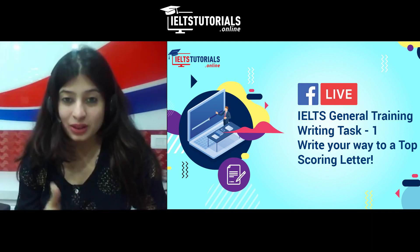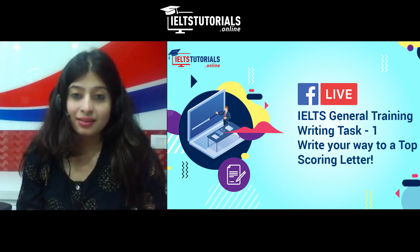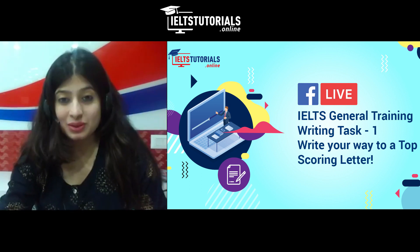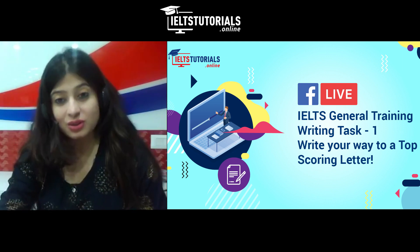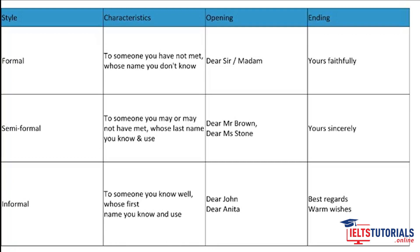I'll take you through a slideshow, explain each letter type, show you a live sample, and cover the band descriptors — how you are scored on letter writing. For a formal letter, you begin with 'Dear Sir or Madam,' followed by a comma. You end with 'Yours faithfully,' followed by a comma and your full name. Opening and closing carry a lot of importance — don't mess up with them.